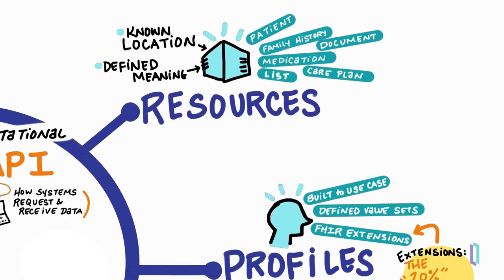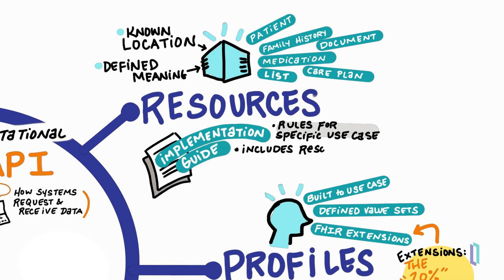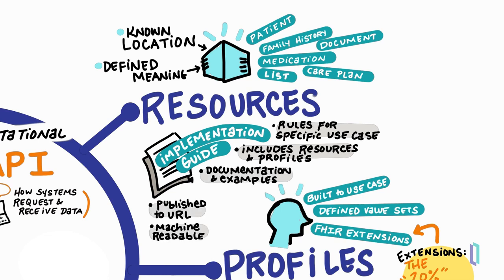Finally, when it comes to putting the FHIR standard into use for a specific purpose, you can refer to FHIR implementation guides, which contain the profile resources, including extensions, terminology bindings, and value sets needed for a particular use case. Beyond these technical details, FHIR implementation guides provide documentation and examples of how they might be used. These guides are published to a publicly available URL using a web publishing tool made by HL7 International as part of the FHIR specification. Since they are machine-readable, FHIR implementation guides can be used to validate FHIR applications developed by using them. To learn more about the FHIR standard, refer to the other content on the InterSystems Learning site.